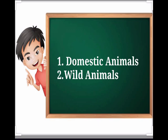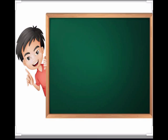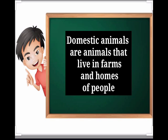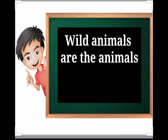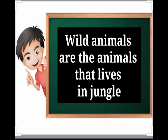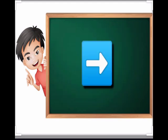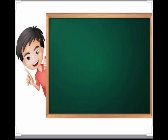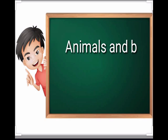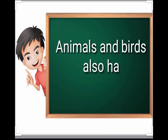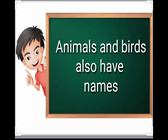Children, animals are of two types: domestic animals and wild animals. Domestic animals are animals that live in farms and in the homes of people. And wild animals are the animals that live in the jungle. More about animals you will study in your EBS class. So children, it means a noun can be a name given to an animal. Hence, animals and birds also have names.